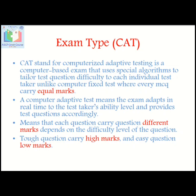Let's now talk about the exam type. CAT stands for Computerized Adaptive Testing — it is a computer-based exam that uses special algorithms to tailor the test question difficulty to each individual test taker. Unlike standard computer-based tests where every MCQ carries equal marks, a computerized adaptive test means the exam adapts in real time to the test taker's ability level. Tough questions carry higher marks and easy questions carry lower marks.